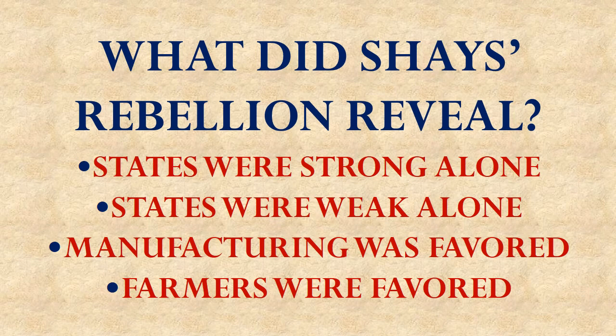Last question: what did Shays' Rebellion reveal about these states? Was it that the states were strong alone, weak alone, that manufacturing was favored in the states, or that farmers were favored in the states? The important answer is that it revealed the states were weak alone, thus giving them reasons to want to adjust the Articles of Confederation to allow them to cooperate better in the future.